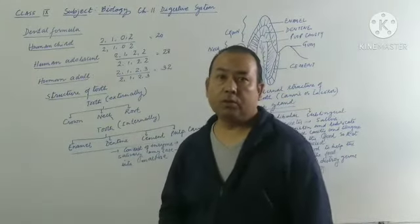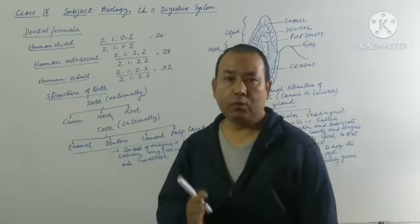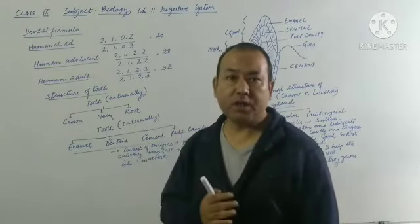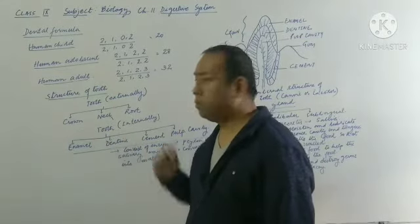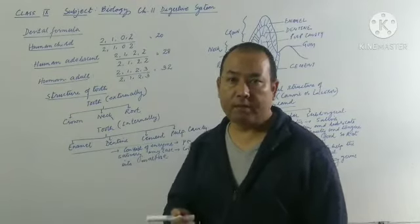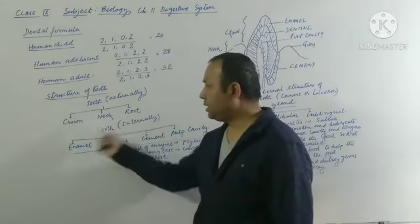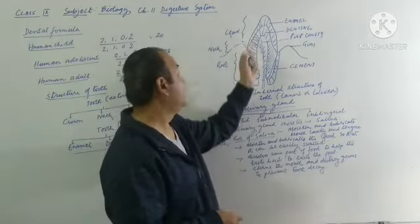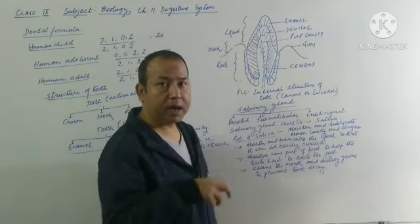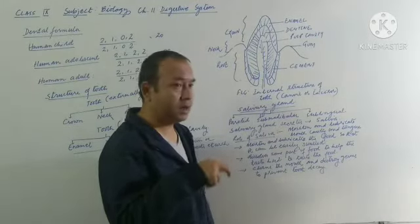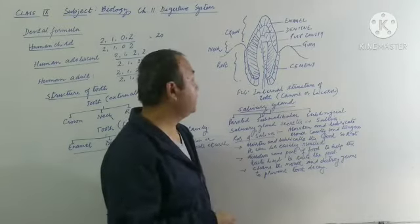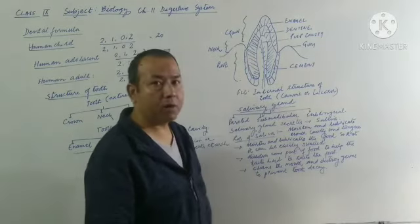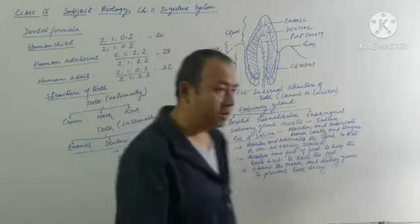Next comes the structure of the tooth. Externally, a tooth can be divided into three distinct regions: crown, neck, and root. The crown is the visible part. The root is the part deep inside the jaw socket, where the tooth is firmly fixed. The region between the crown and the root is called the neck.